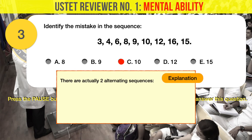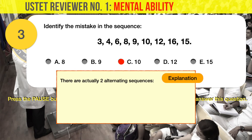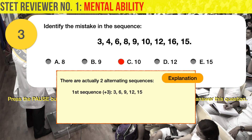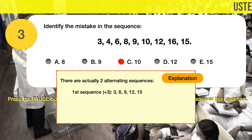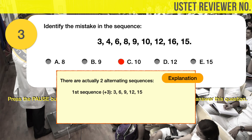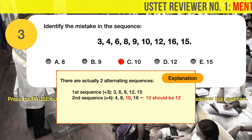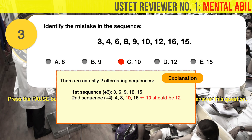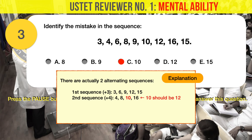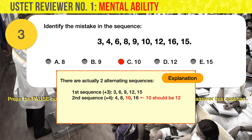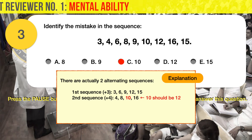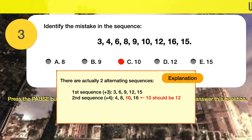There are actually two alternating sequences. The first sequence — 3, 6, 9, 12, and 15 — is an arithmetic sequence where 3 is added to each term to come up with the next. This is where the mistake in the sequence is. The mistake is the number 10; it should be 12.